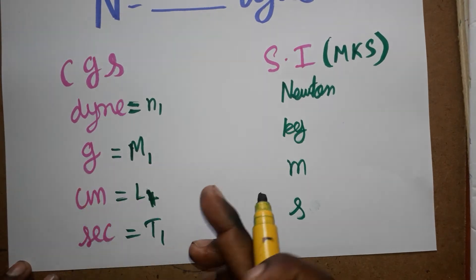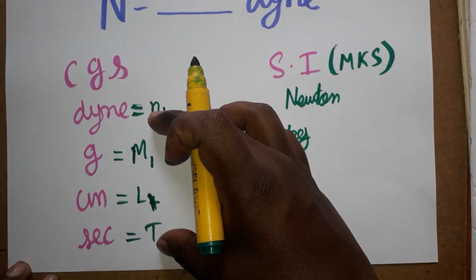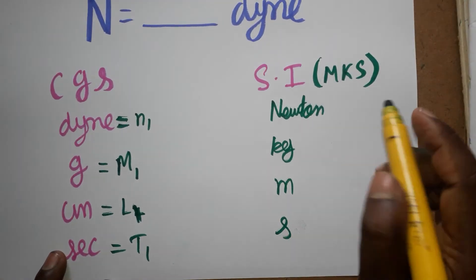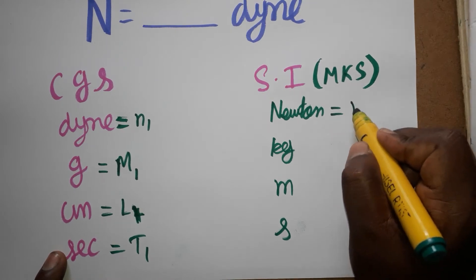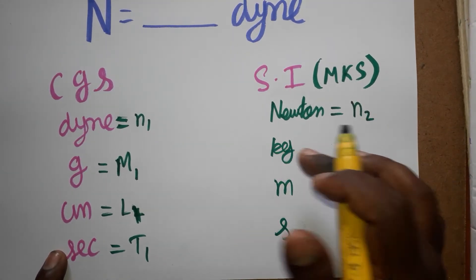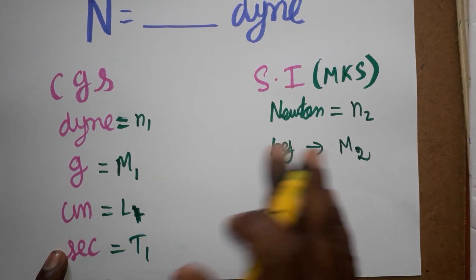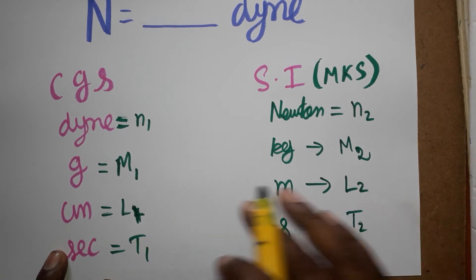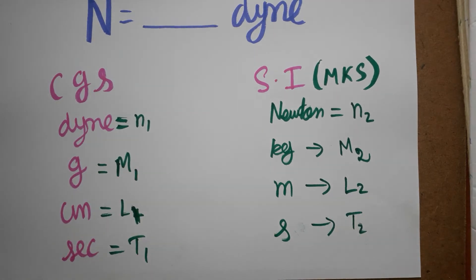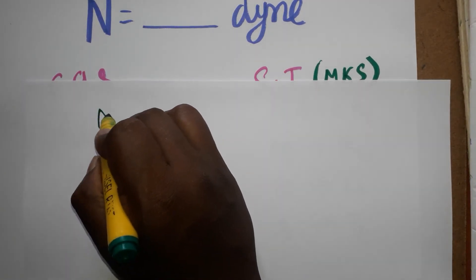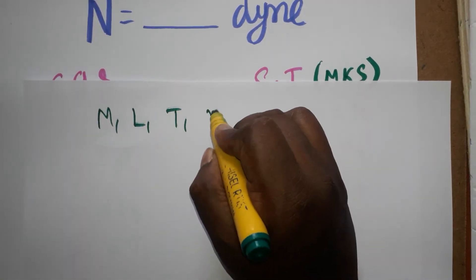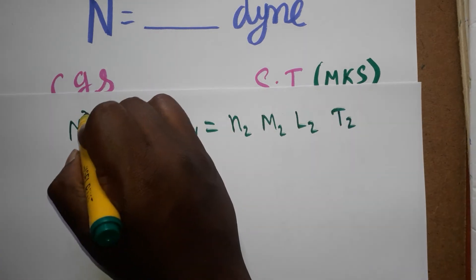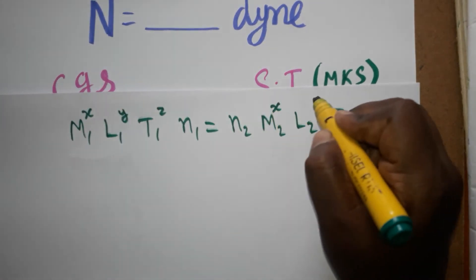For dimensional formula, mass is M, length is L, and time is T. The force unit in the SI system is Newton, taken as N2. Mass is M2, giving us M1, L1, T1 for CGS and M2, L2, T2 for SI. The conversion formula is: N1 × (M1)^x (L1)^y (T1)^z = N2 × (M2)^x (L2)^y (T2)^z.